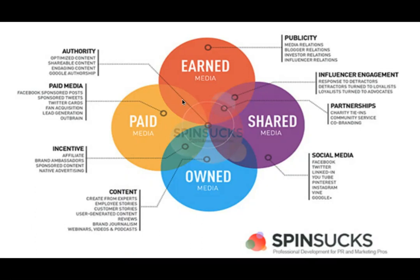The important part about the PESO model is that we can take any kind of media — traditional, digital, or any future media — and make it fit into this model. For example, if you post something on Instagram that's shared, and then you boost it with a little extra money, the boosted part is paid. If somebody sees that and decides to write an article about you in the newspaper, that newspaper article is earned — earned on the merits.